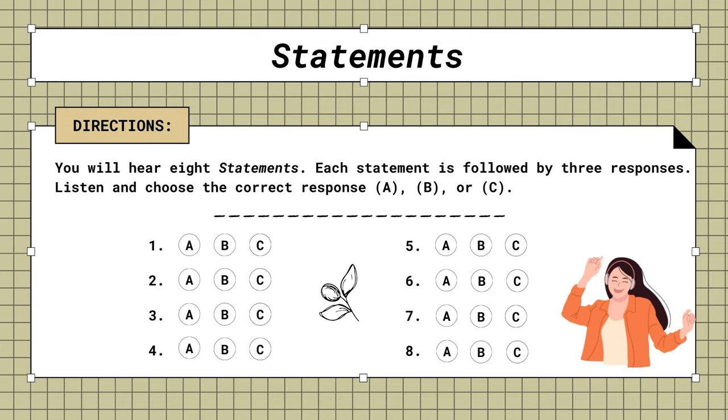7. The contract says we cannot cancel. A. I lost contact weeks ago. B. Are you sure there isn't a way? C. Yes, I canceled the order.